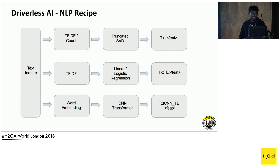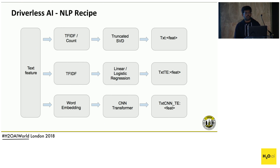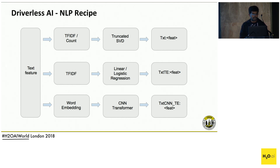Once we extract TF-IDF and count features from the text columns, it leads to an enormous dimensional space because the number of words can be very large. To reduce that, we do a truncated SVD on top of those features. These become the first type of features fed into our model, and they are named TXT features, which you can see in Driverless AI.